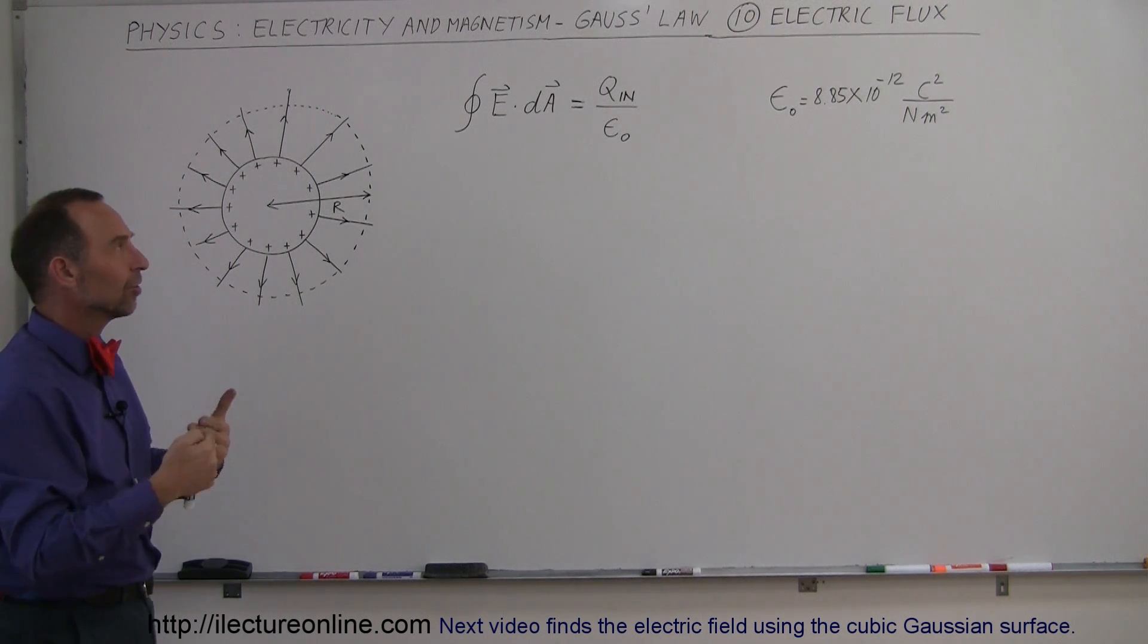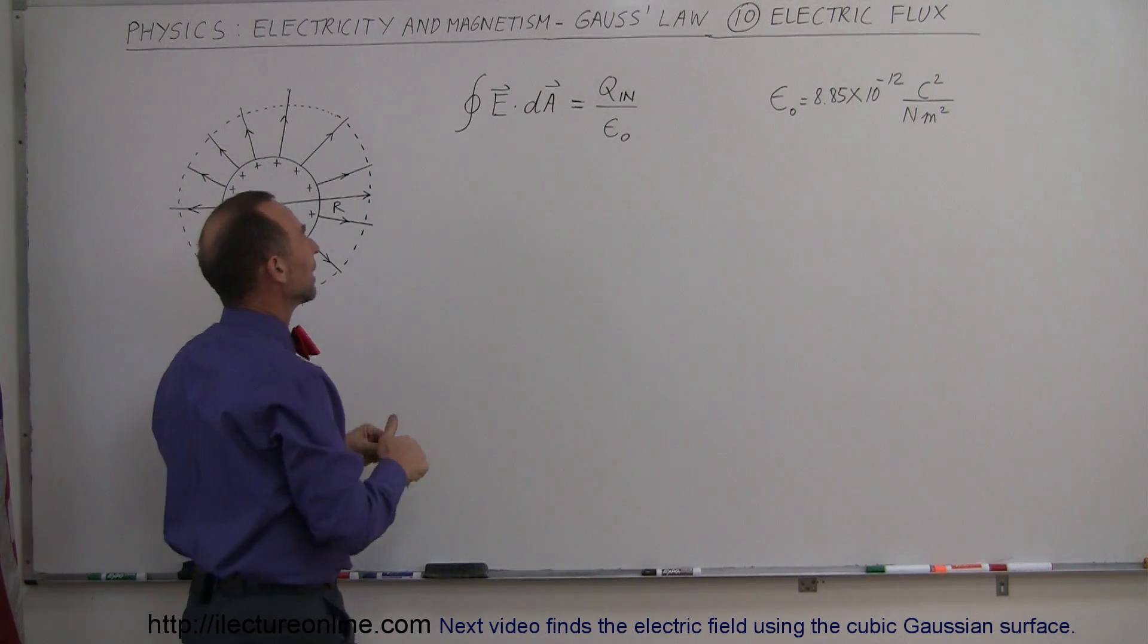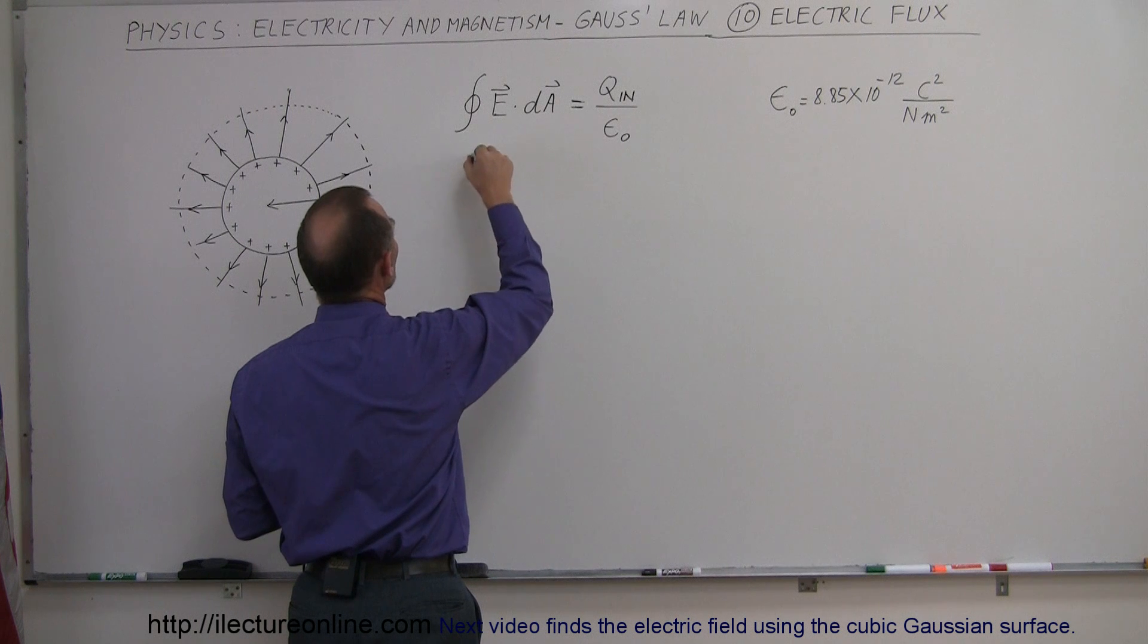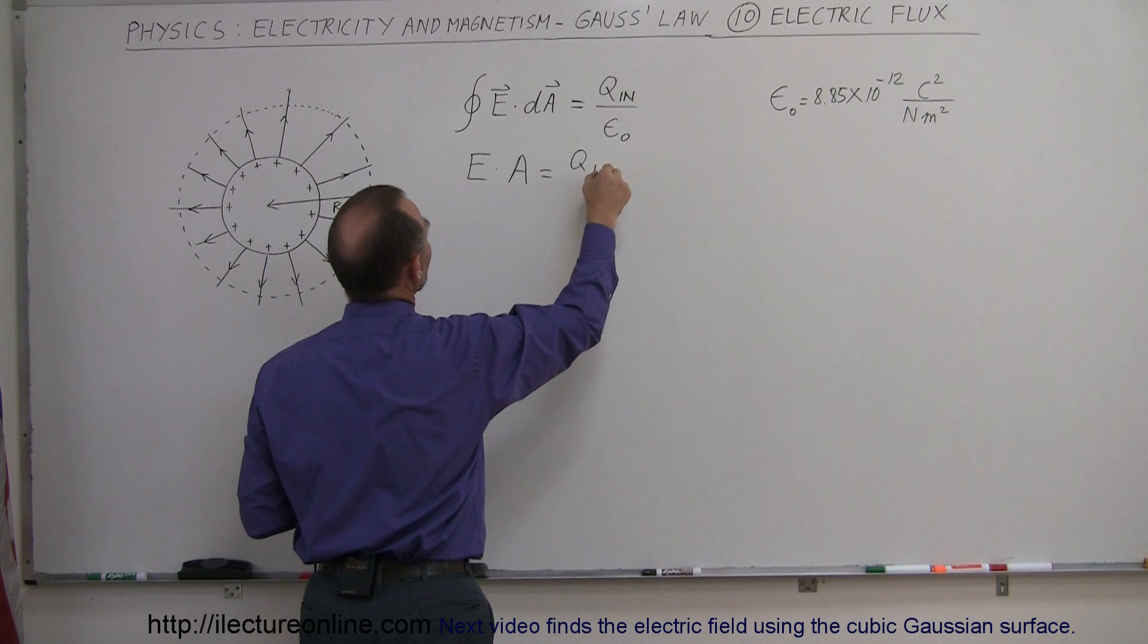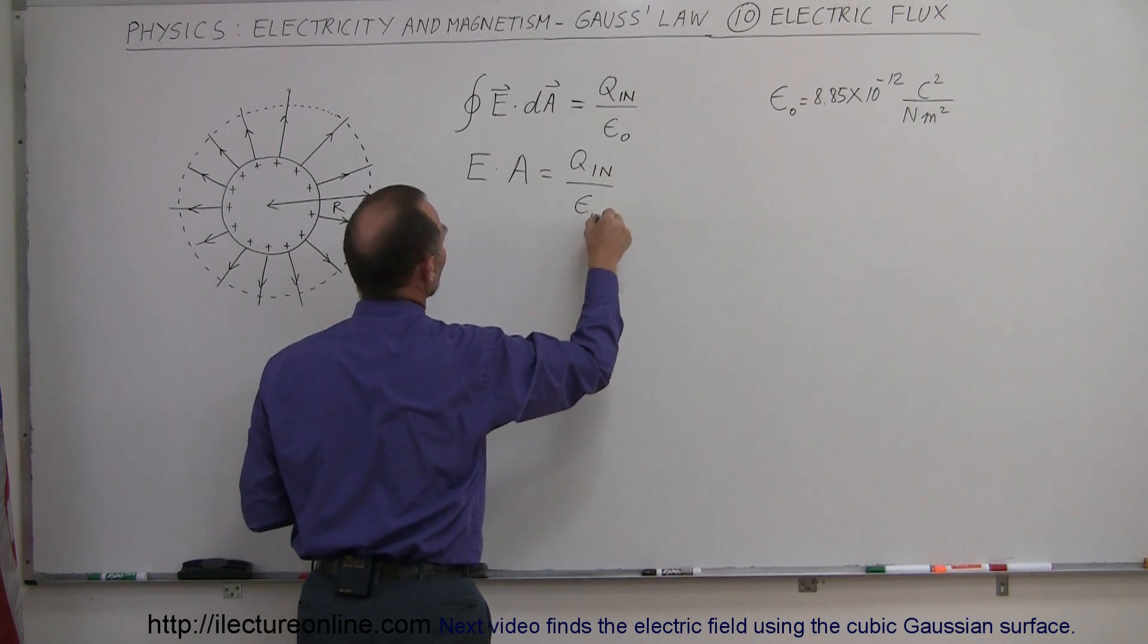Therefore the cosine of zero is zero, therefore we can say that the integral of that is equal to the strength of the electric field times the area of the surface, which then has to equal the Q inside divided by epsilon naught.